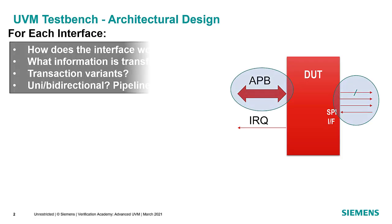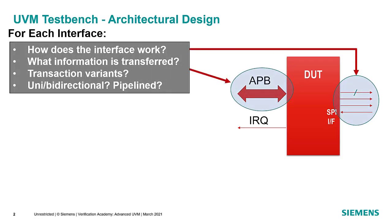When we think about verifying a particular design, there are certain things we need to consider. First, we need to think about the interfaces we're going to use to communicate with the design — how each interface works, what information is being transferred, whether there are variants of the transactions, and whether it's unidirectional, bidirectional, or pipeline.